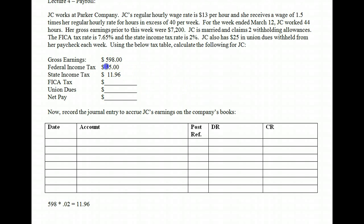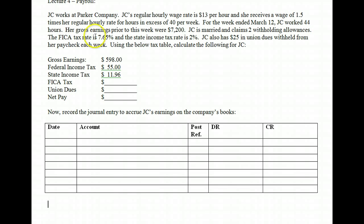For state tax in this class, you simply take the percent times the amount. There are 50 different states with 50 different laws regarding income tax, so we're just going to use a generic percentage of 2%. Next comes FICA taxes. The FICA taxes are 7.65% on all earnings, and remember there is a cap, but the cap is up in the $100,000s.